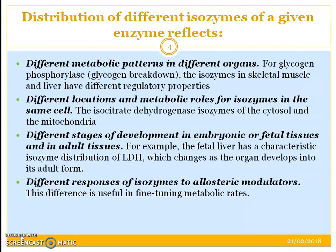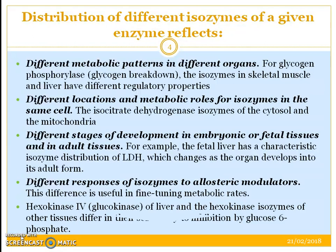Different stages of development in embryonic or fetal tissues and in adult tissues — for example, LDH has different properties in fetal liver compared to its adult form. Lastly, different responses of isozymes to allosteric modulators. This difference is useful in fine-tuning metabolic rates. For example, hexokinase 4 of the liver and hexokinase isozymes of other tissues differ in their sensitivity to inhibition by glucose 6-phosphate, which acts as its substrate.